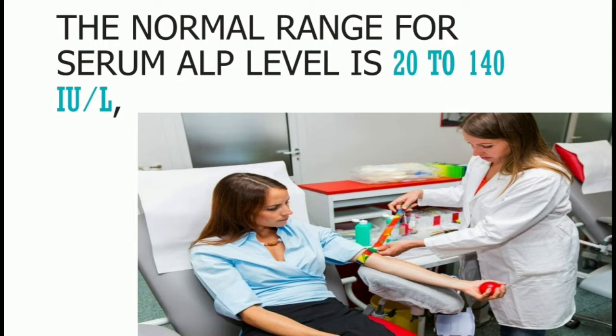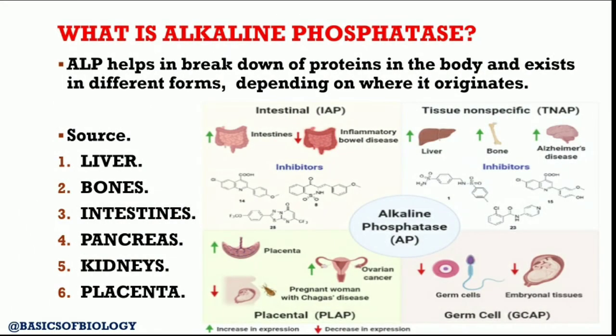The normal range also depends on whether you are pregnant. The normal range of serum alkaline phosphatase level is 20 to 140 international units per liter, but this can vary from laboratory to laboratory. The normal range runs higher in children and decreases with age. The best way to know what is normal is to discuss the results with your doctor, who will be able to interpret the lab's specific results and reference range.